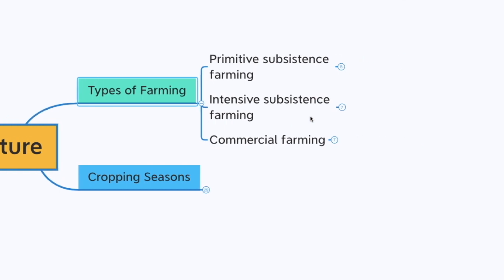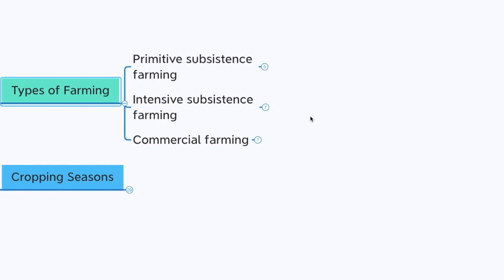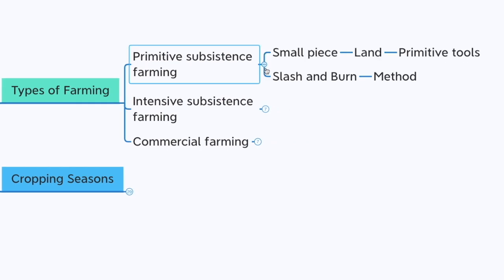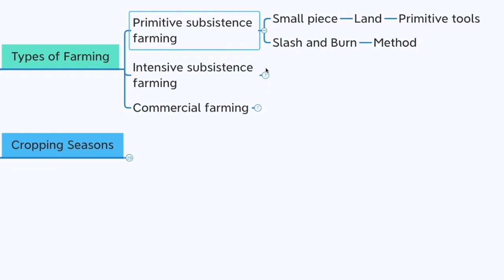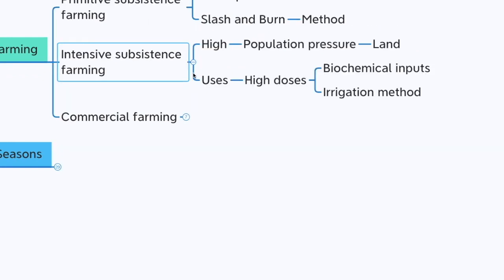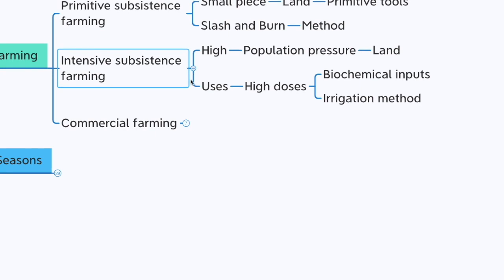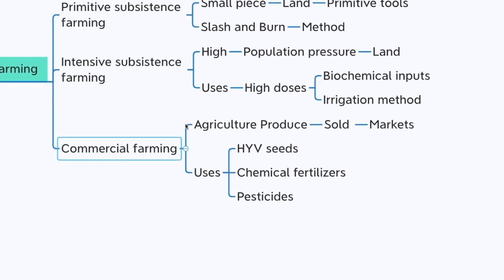The first type is primitive subsistence farming. Here a farmer cultivates on a small piece of land with primitive tools; slash and burn agriculture is one of its methods. The second is intensive subsistence farming, done with high population pressure on land — it uses high doses of biochemical inputs and irrigation methods. The third is commercial farming, where the agricultural produce is sold in the markets.